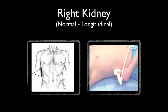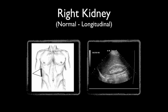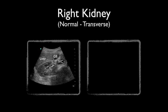Place the probe along the right mid-axillary line to find the longitudinal view of the right kidney. The kidney is football-shaped, usually between 9 and 12 centimeters in length and 4 to 5 centimeters in width. Notice the hyperechoic diaphragm on the left side of the screen and the liver above. The transverse view of the kidney appears C-shaped. The bright area around the kidney is Gerota's fascia and perinephric fat. These are normal findings.